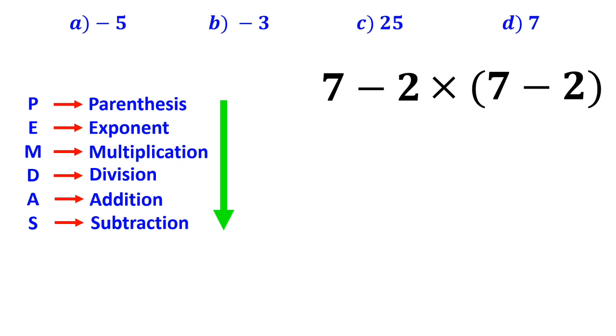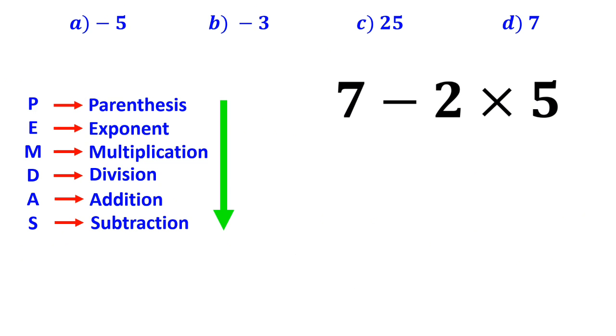So, according to this rule, we first go to the parenthesis. And this expression becomes 7 minus 2 times 5. In the next step, we go to multiplication, because it has a higher priority than subtraction.